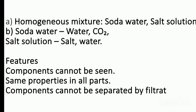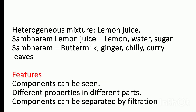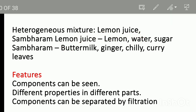Heterogeneous mixtures: lemon juice — constituents are lemon, water and sugar; buttermilk — constituents are ginger, chili and curry leaves. Components can be seen; different properties in different parts; different taste; components can be separated by filtration.